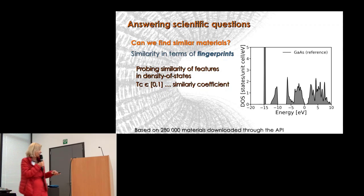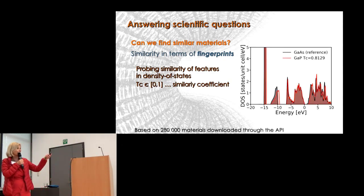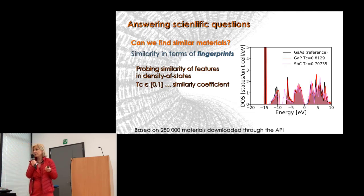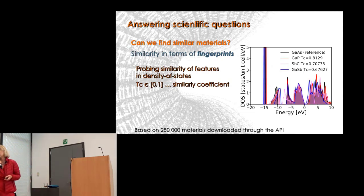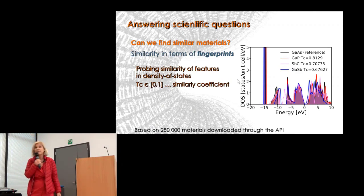This is the example of gallium arsenide as the reference system. I'm asking which materials I can find. Gallium phosphide is very similar; the next would be whatever you find. For every material in the encyclopedia where we have density of states, we show the five most similar materials we can find in the database. This is based on a search among 280,000 materials downloaded through the encyclopedia API.